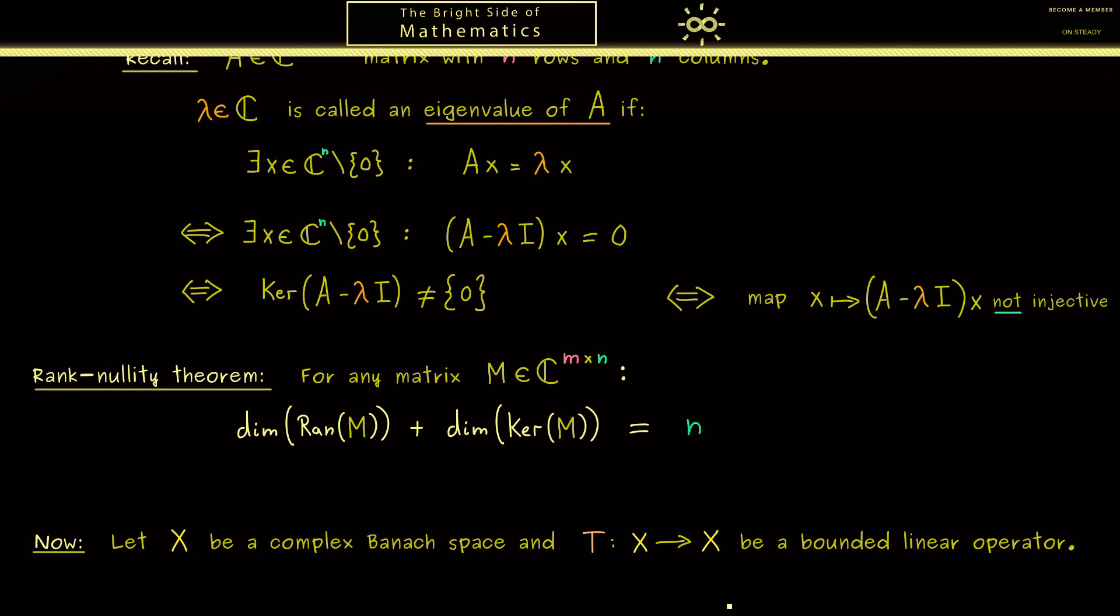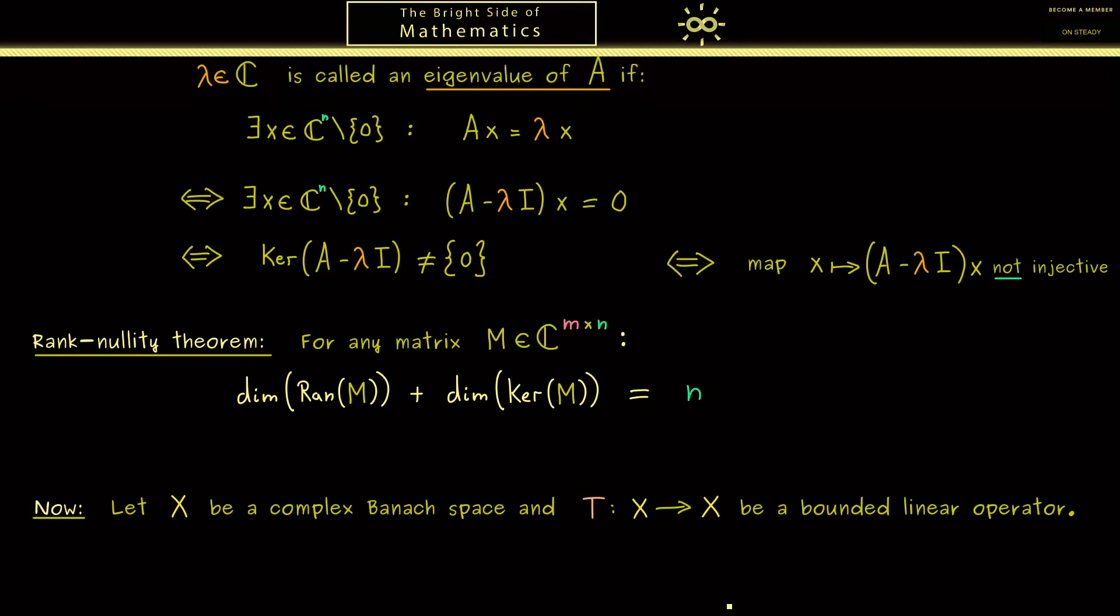To put it in other words, X is the generalization of ℂⁿ and T for the matrix A. Therefore the spectrum of T should be the generalization of the set of all eigenvalues, so it should be a subset of the complex numbers.